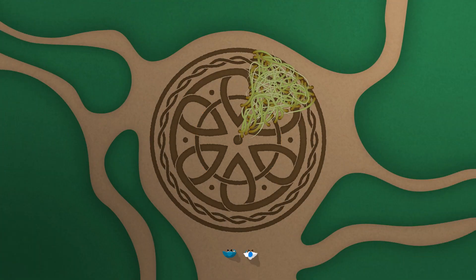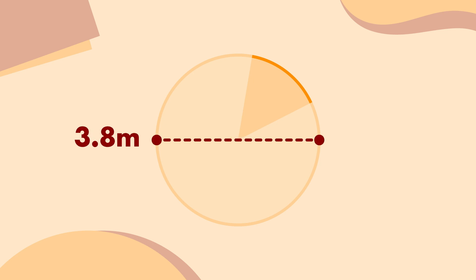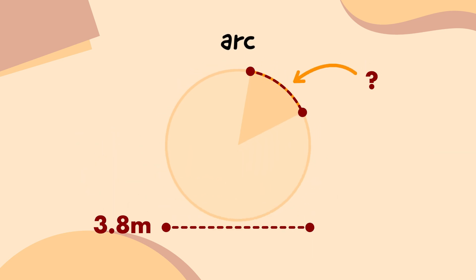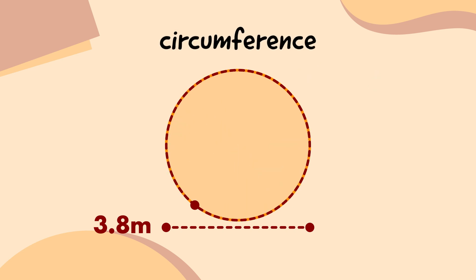I think we're ready to make the spell that'll clear away the vines, so the emblem can summon the Wills of the Wisp! According to my measuring staff, the diameter of the emblem's circle is 3.8 metres. I'll start by working out the length of the arc that the vines cover. To do that, I first need to work out the circumference of the whole emblem, which is pi d. So I'll multiply 3.8 by pi.